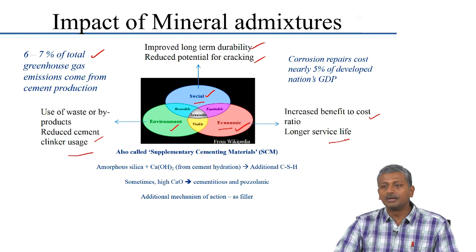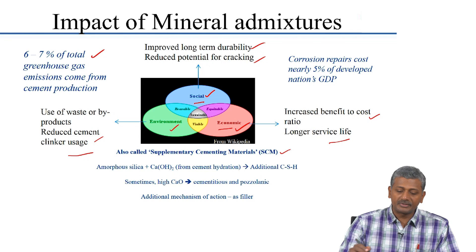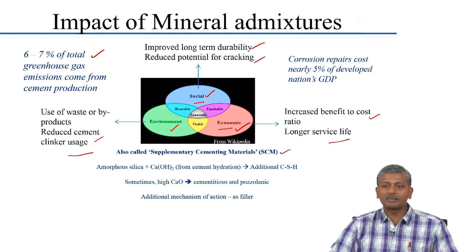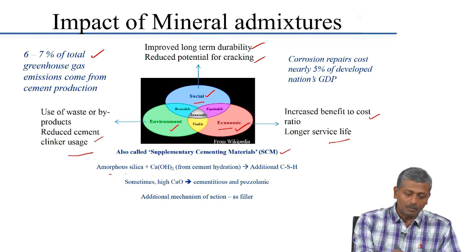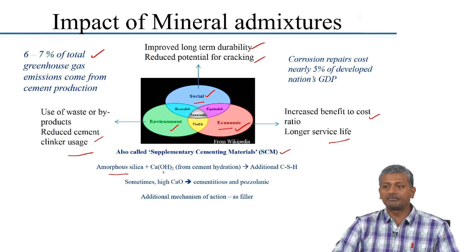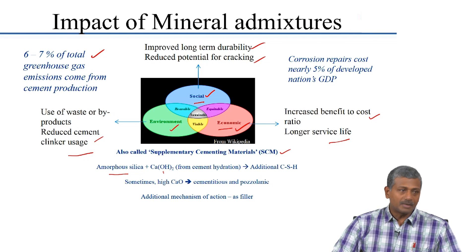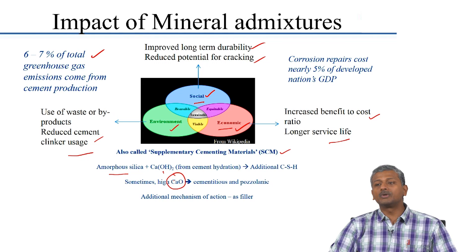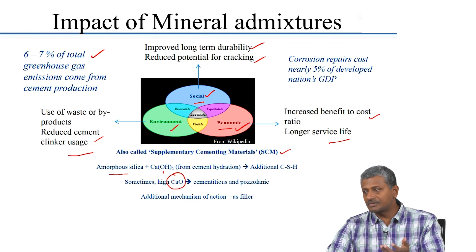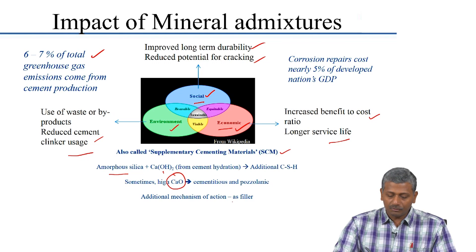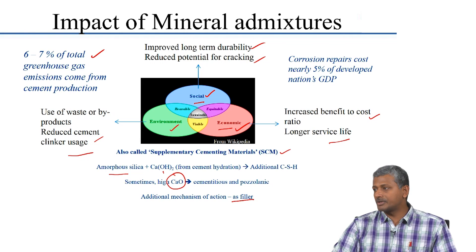Mineral admixtures are also called supplementary cementing materials. Supplementary materials are ones which usually provide amorphous silica that reacts with calcium hydroxide from cement hydration, leading to the formation of additional CSH. In some cases, mineral additives may also have lime content which makes them both cementitious and pozzolanic. If you have reactive silica as well as lime present, you might have both cementitious and pozzolanic characteristics. Additionally, many of these can also function as filler.